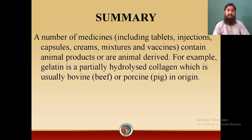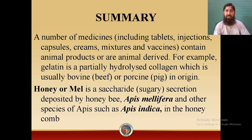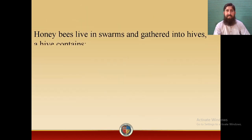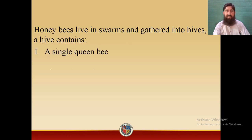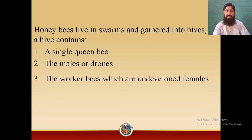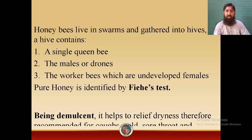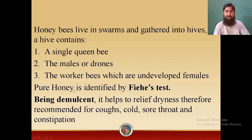Summary: we studied that a number of medicines including tablets, injections, capsules, creams, mixtures, and vaccines contain animal products or animal-derived products. For example, gelatin is a partially hydrolyzed collagen, usually bovine or porcine in origin. We studied the biological source of honey — a saccharide sugary secretion deposited by Apis mellifera and other species such as Apis indica in the honeycomb. We studied that honeybees live in swarms and gather into hives containing three types: a single queen bee, drones, and worker bees. We also studied the Fiehe's test for identification of pure honey, and the medicinal uses of honey — being a demulcent it helps relieve dryness and is recommended for coughs, colds, sore throat, and constipation.